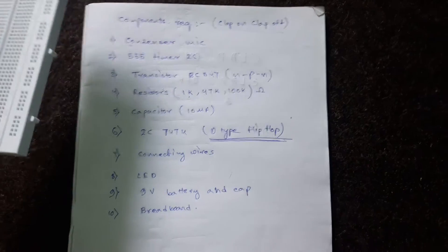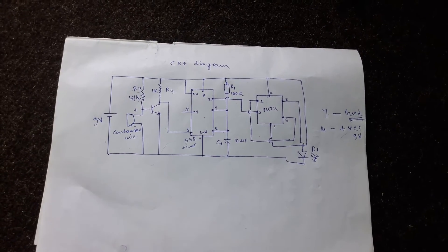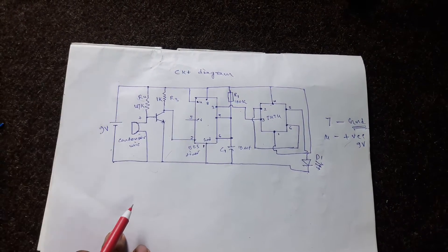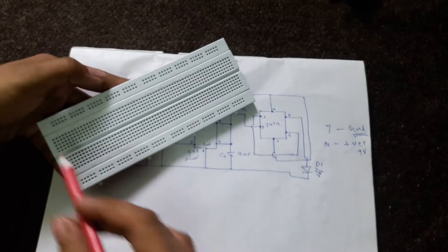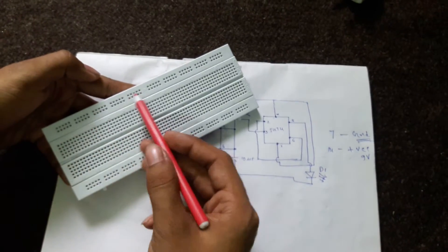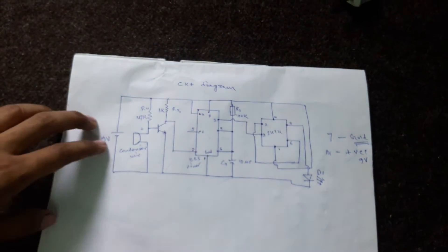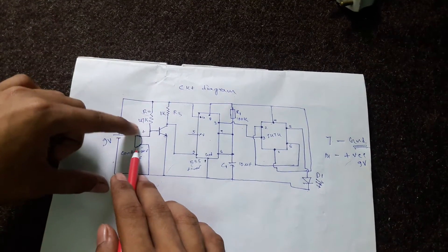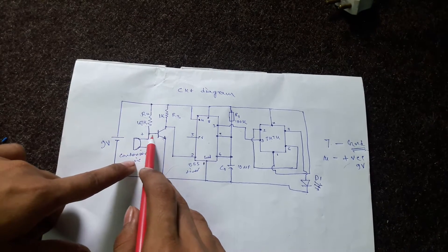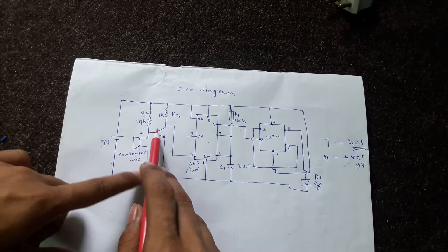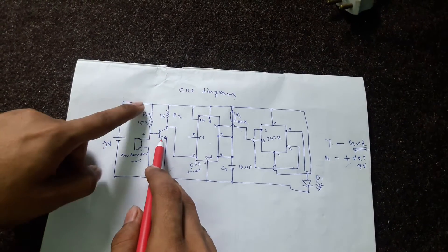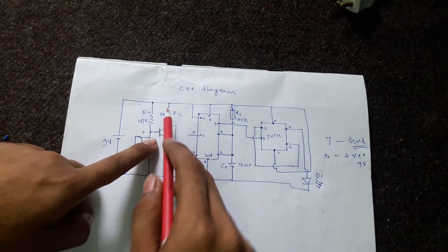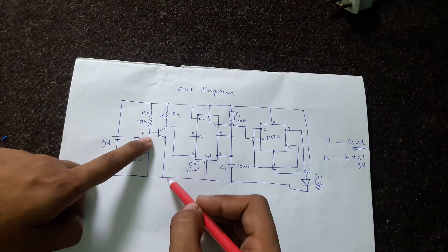Now let's start with the circuit diagram. The 9-volt battery is connected - this terminal is negative and this terminal is positive. Here comes the condenser mic. The positive of the condenser mic goes to the base of the transistor through a 47K resistance. There's a 1K resistance from the collector end. This is a common emitter connection and the emitter is directly grounded.